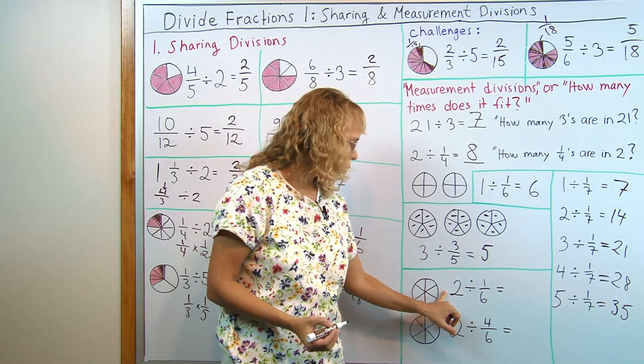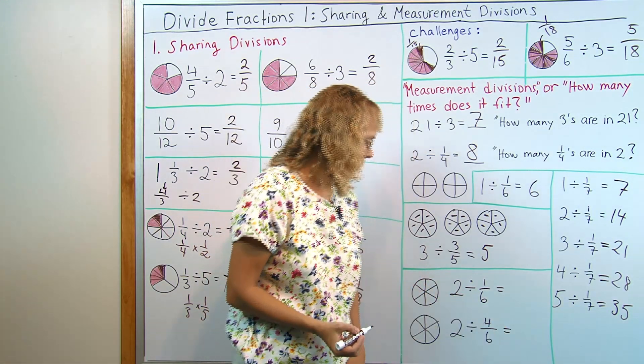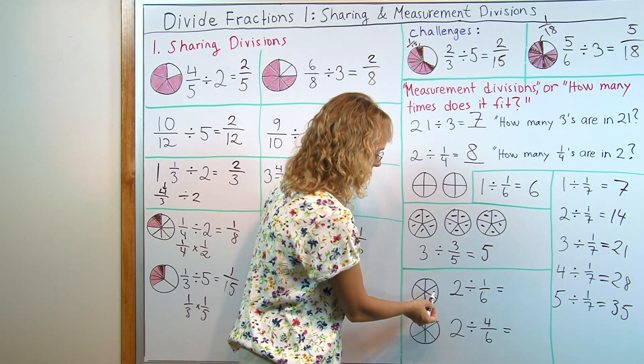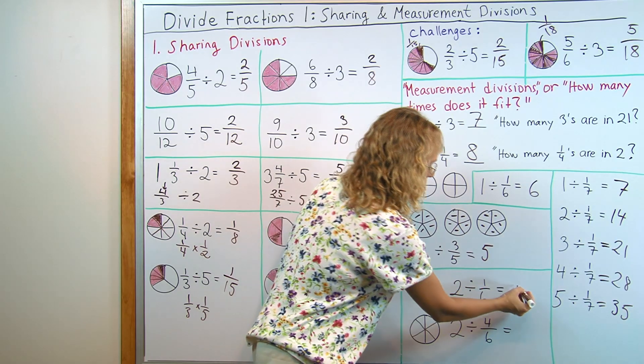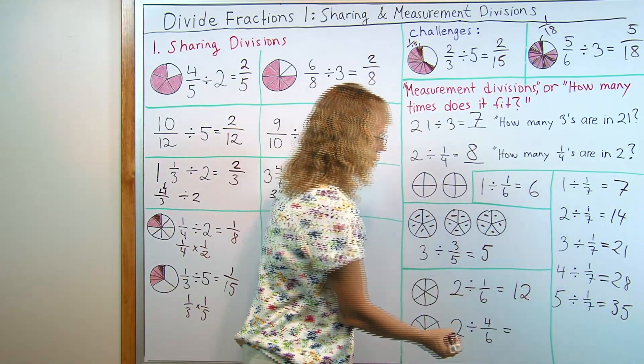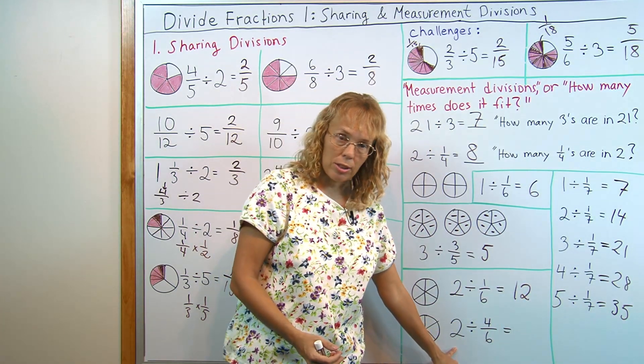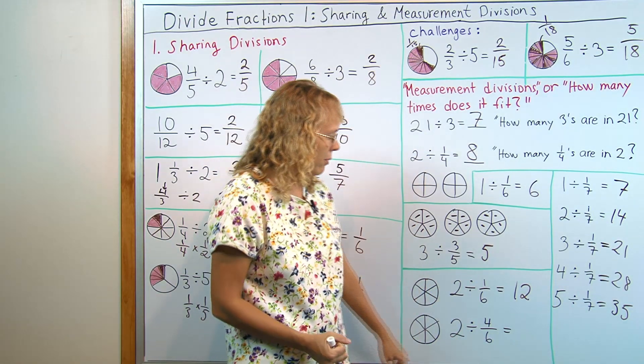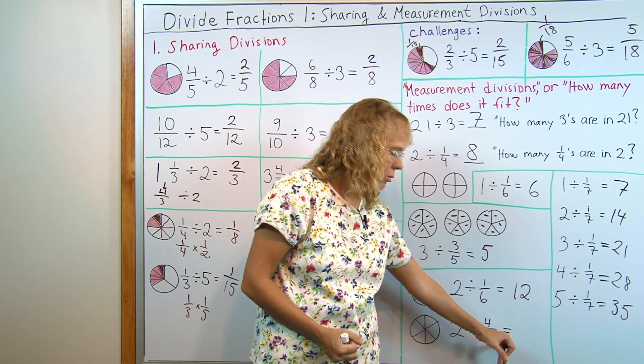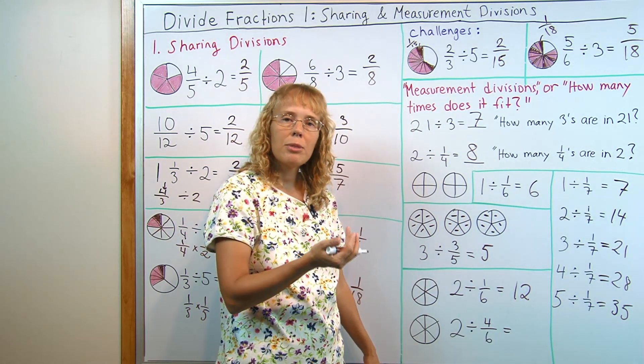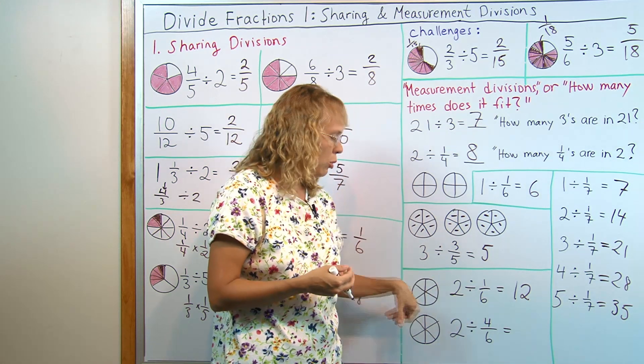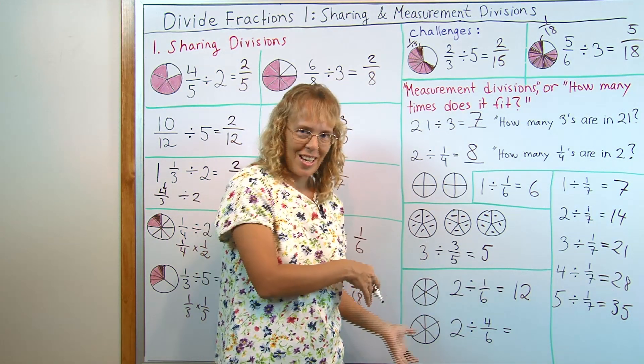Here's another one of those easy ones. Two divided by one-sixth. I have my two pies drawn, so I can even count. But there's six-sixths and another six, so the answer is twelve. But now, let's compare it to this division. Two divided by four-sixths. This amount, four-sixths, is four times as much as it was here. So, surely, it fits into two four times less times. So, I would expect the answer to be three.